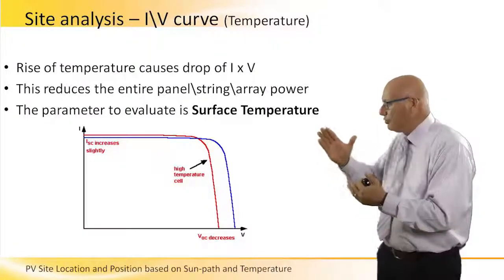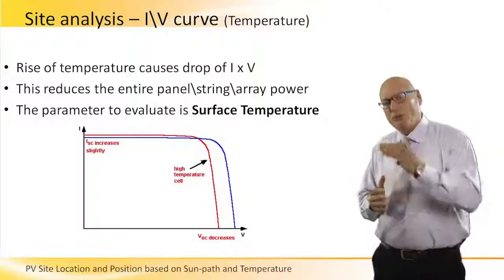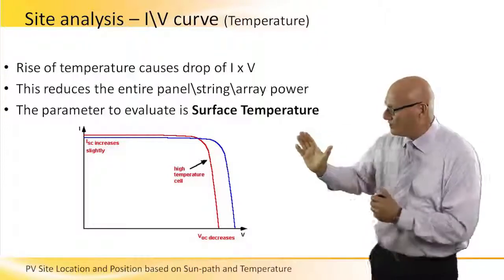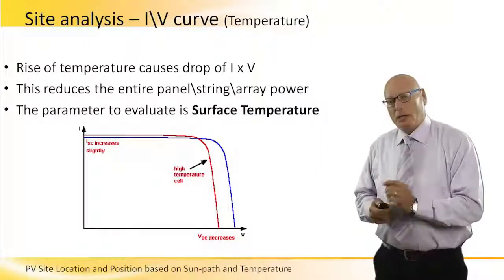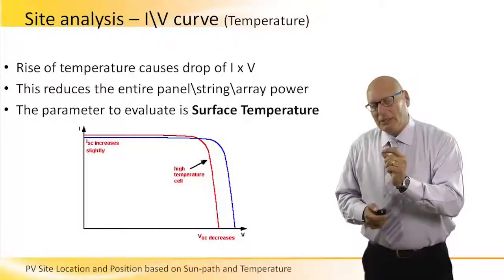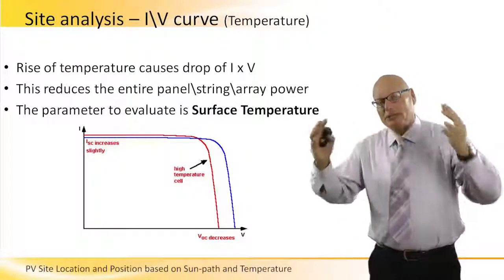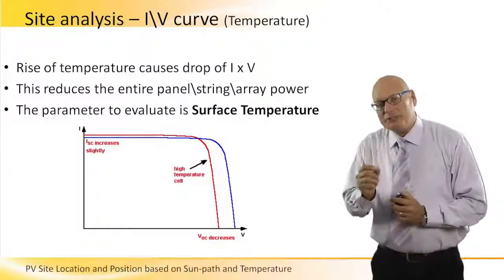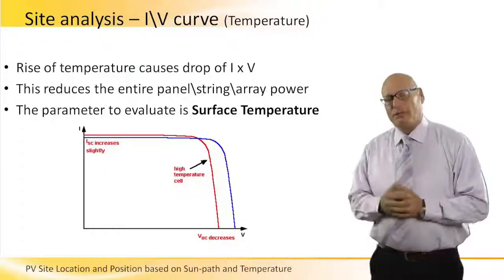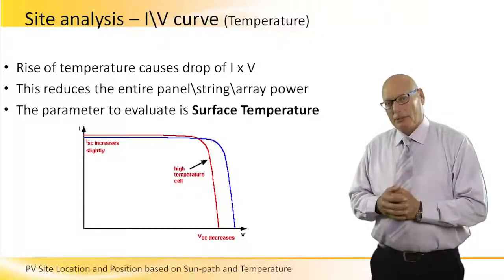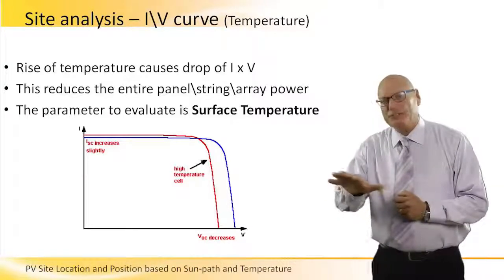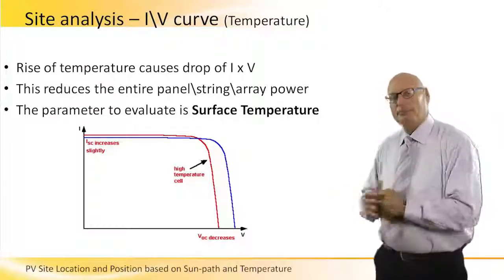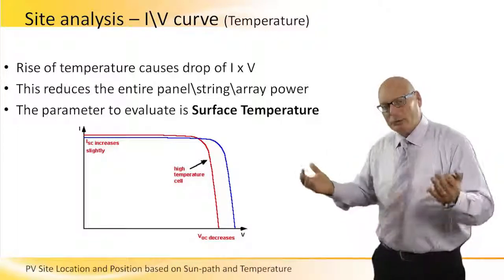Ideally, we would like to push it to the right so that both the current and the voltage are at their maximum, and therefore the power will be at maximum. But the temperature brings it left. What we are interested in is not only the surrounding temperature or environmental temperature — we are most interested in the surface temperature of the panel. The surface temperature of the panel can get to 55 or 60 degrees if the environmental temperature in the area is only 25 or 30 degrees.